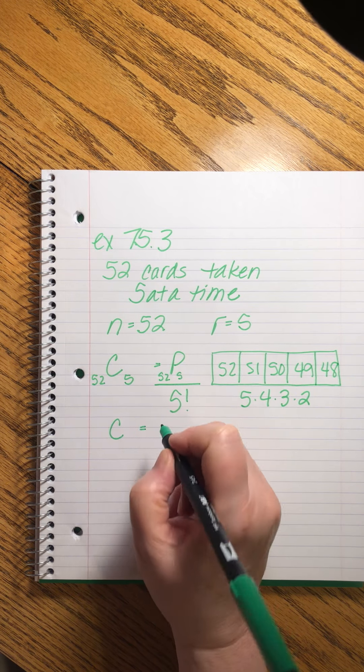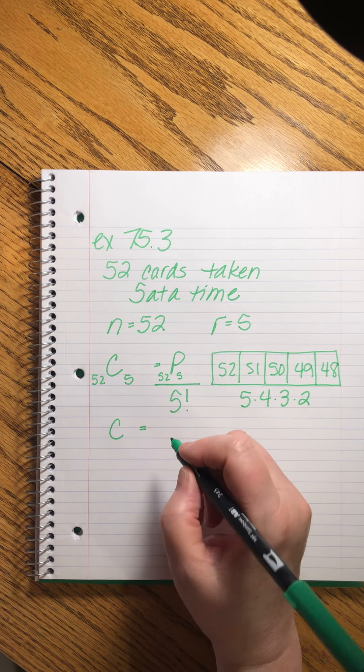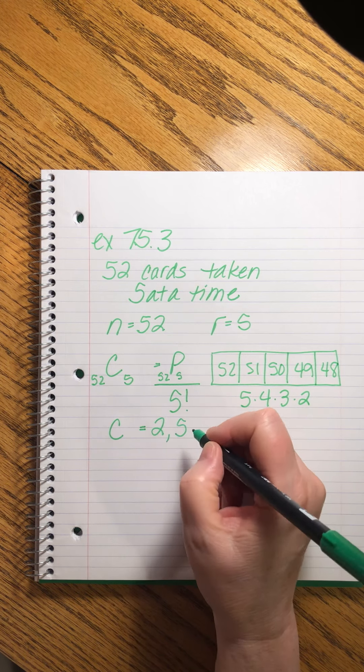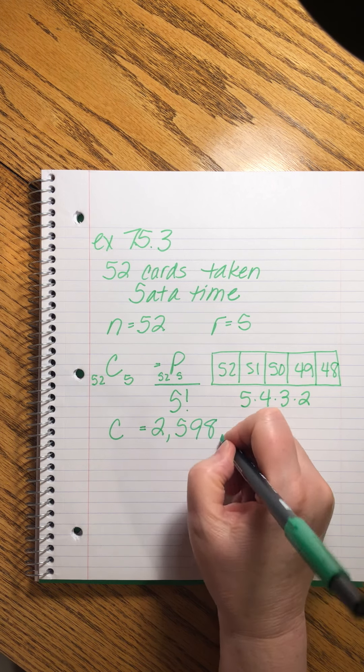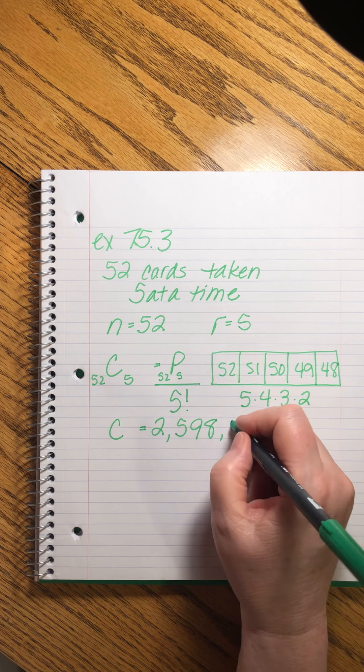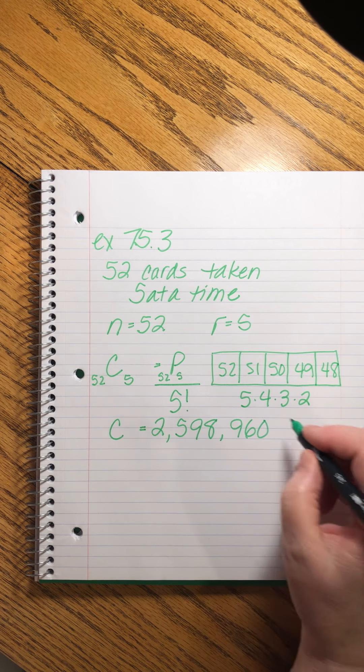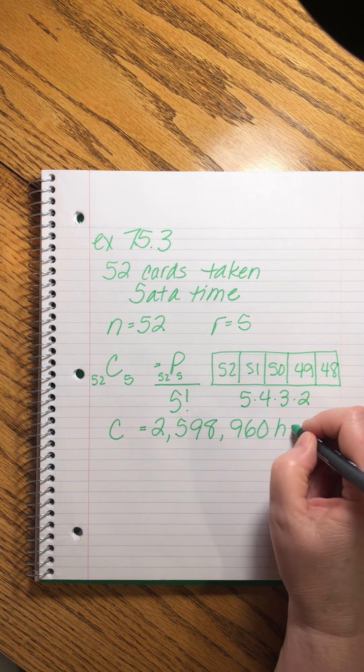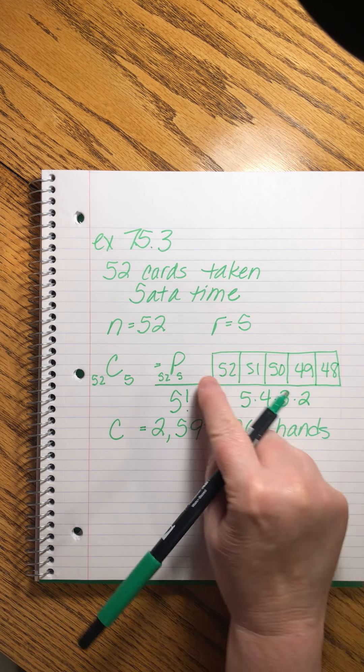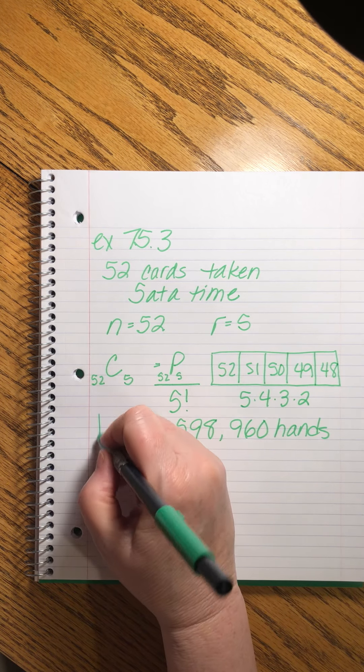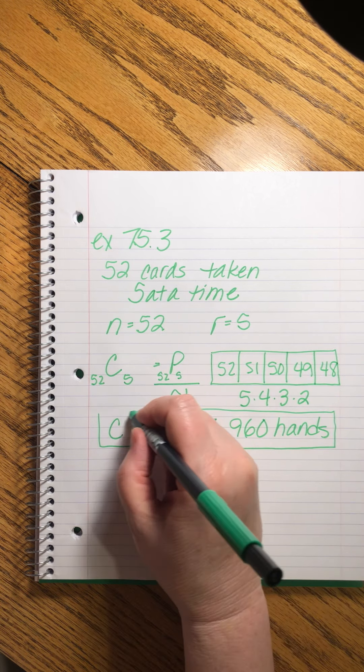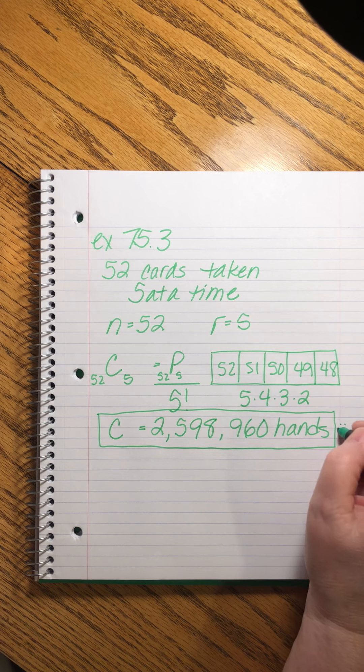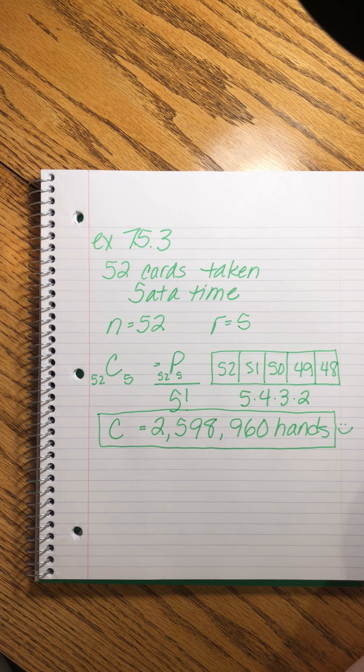And the number will be 2,598,960. Grab your calculator right now and make sure that you can calculate that whole thing. Pause if you need a little more time to work it out. Pause me and come back when you're done.